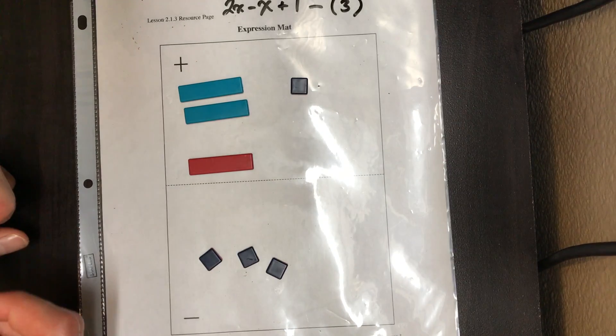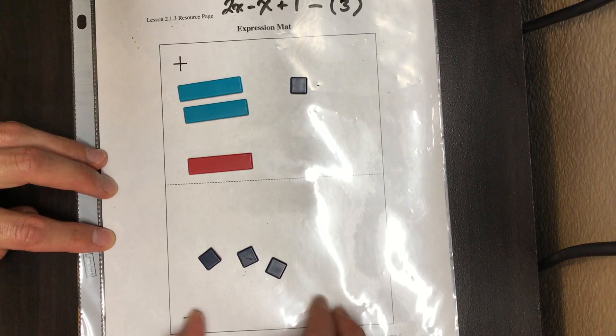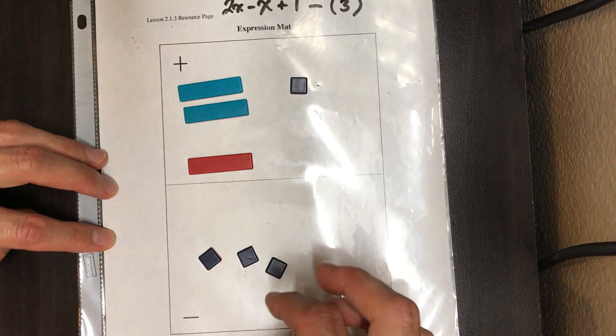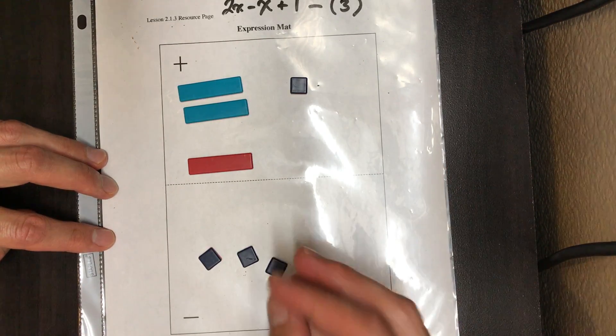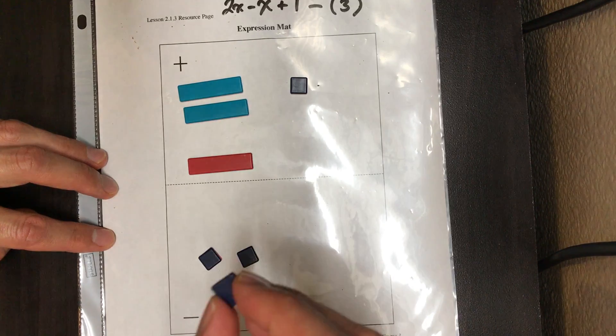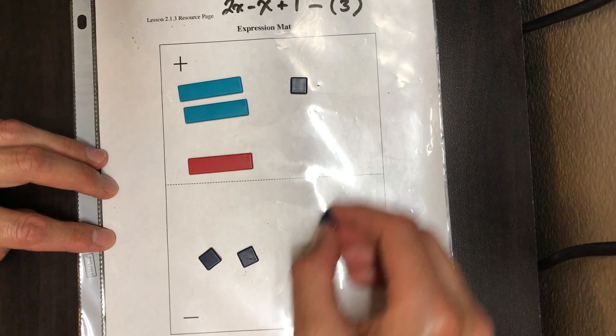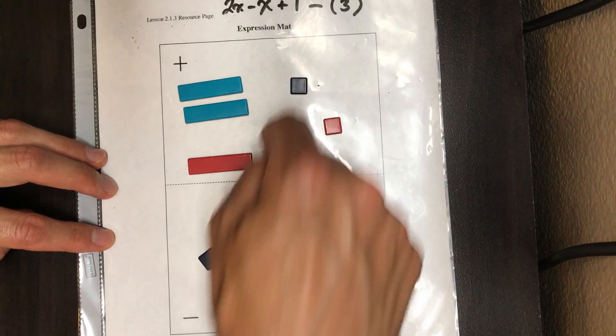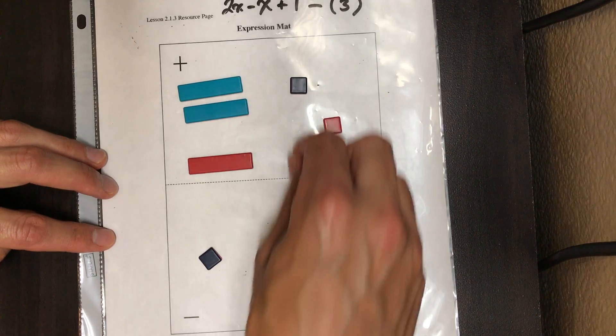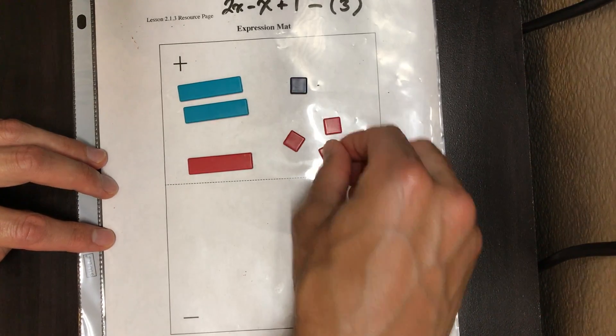So what I learned is the step in working with these algebra tiles is to take this opposite value and go ahead and flip them over, make them their opposites. So instead of positive three here, when we move it over here in this part of the mat, it becomes its opposite. There it is.